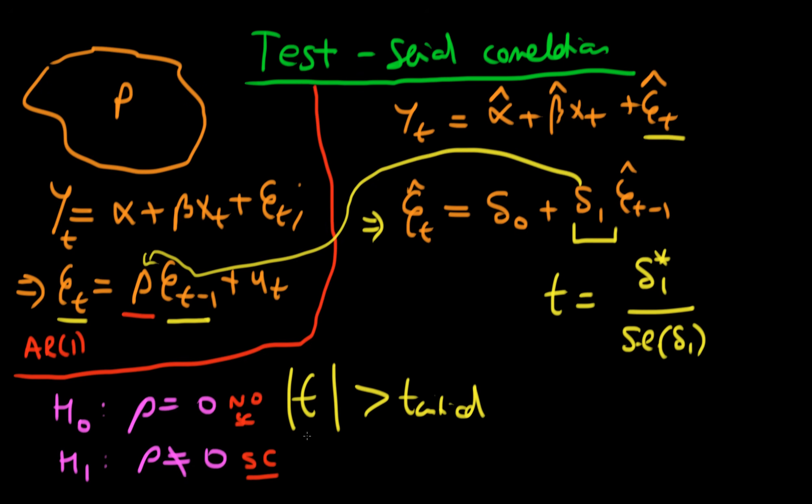If our value of t is greater than the critical value, that means delta one is significant and there is evidence of some error structure. It turns out that replacing our population errors by our sample equivalents is actually quite a good approach under a range of assumptions. If the magnitude of t is greater than the critical value, we reject the null hypothesis of no serial correlation.